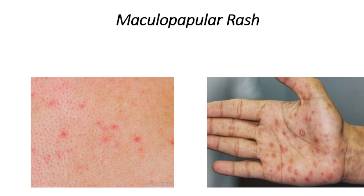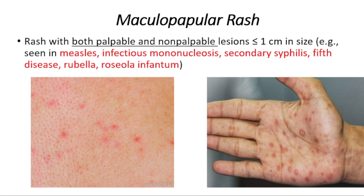Maculopapular rash is common — it's a rash with both palpable and non-palpable lesions, less than one centimeter in size. It's typically seen in measles, infectious mononucleosis, secondary syphilis, fifth disease, and rubella or roseola infantum.